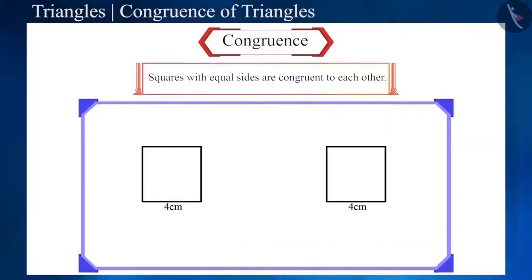Similarly, squares with equal sides are congruent to each other. For example, two or more squares with their sides measuring 4 cm are congruent to each other. Here, the congruency of a square depends on the side of a square.